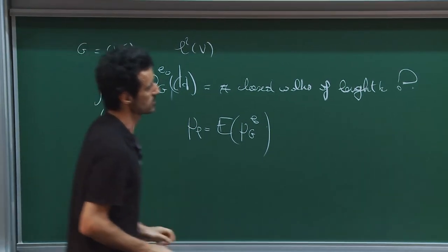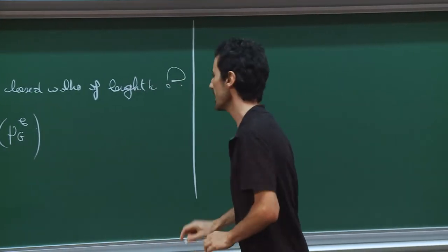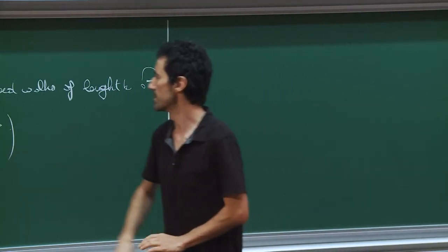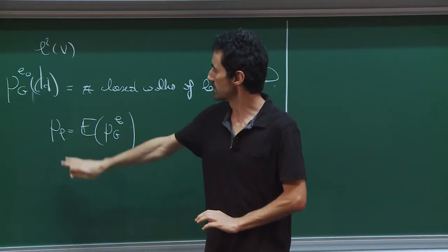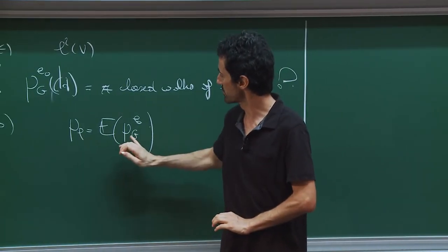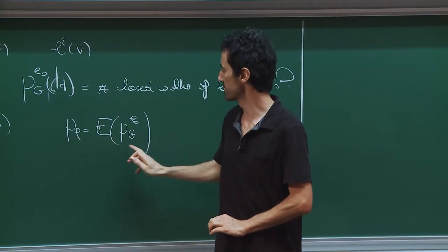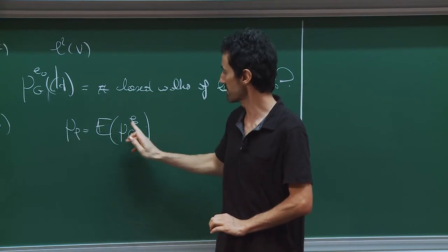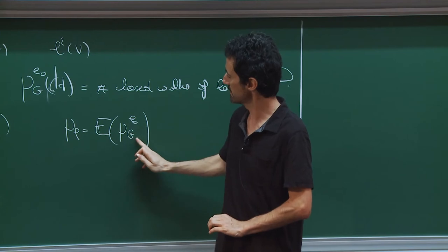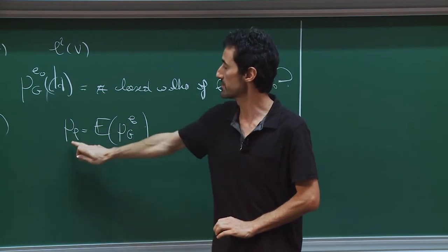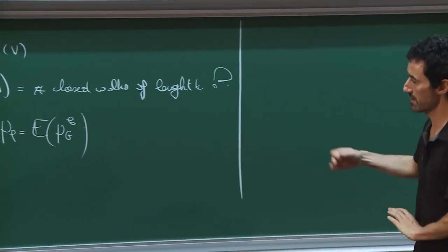Today I want to study the Lebesgue decomposition of these two measures: either the random spectral measure or the average spectral measure mu_rho.